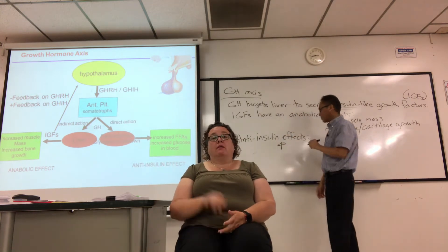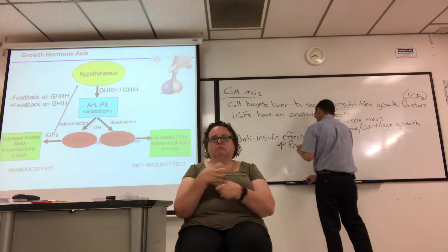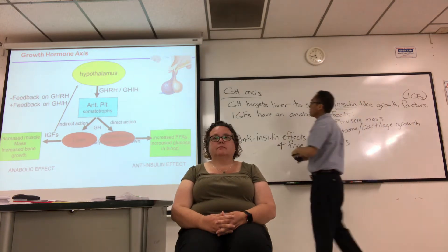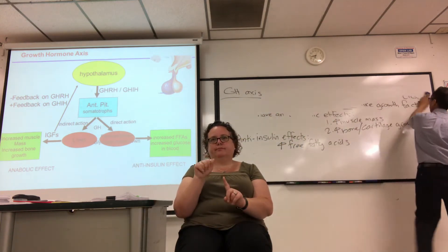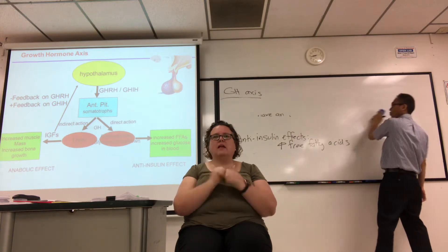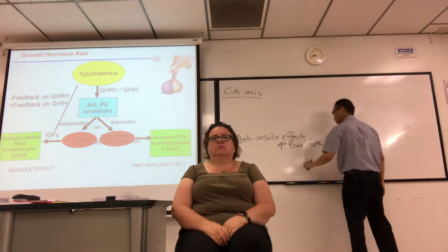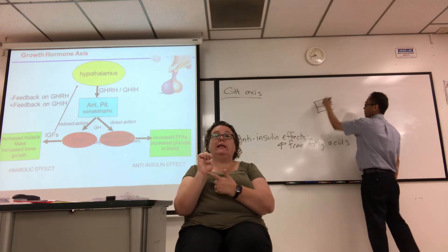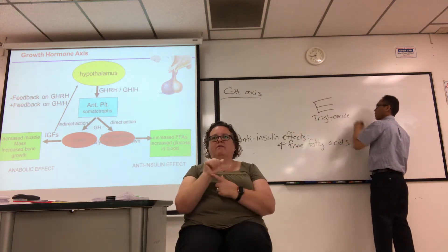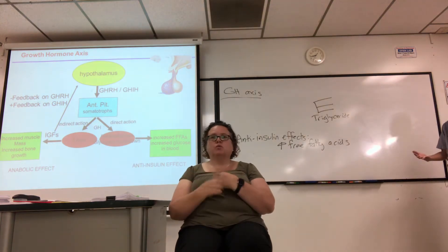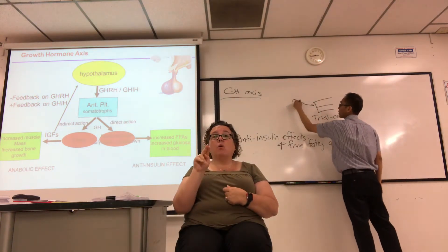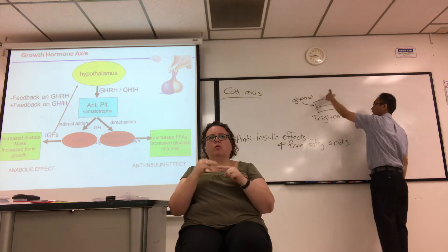FFA stands for free fatty acids — basically fat. Fat is stored as triglycerides throughout the body. If I draw a letter E, that's the simplest way to represent a triglyceride. The backbone is a glycerol molecule and each hydrocarbon chain is a fatty acid. Lipase can break that apart, liberating the fatty acid from the triglyceride molecule so it can circulate in the blood. That free fatty acid can then enter the muscle cell and be burned for ATP during your workout.